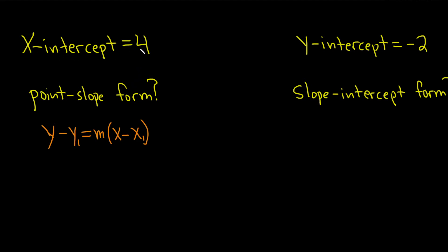When they tell you that the x-intercept is 4, that means x is 4, so that means y must be 0. And when they tell you that the y-intercept is negative 2, that means y is negative 2, so x must be 0.